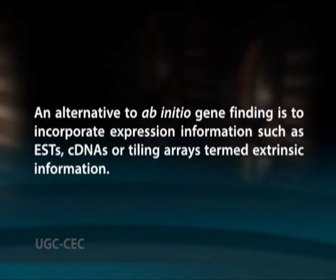Procedures utilizing properties of the DNA sequence alone to predict locations of genes are termed ab initio methods, and may additionally incorporate information from homologous regions of related genomes. Ab initio methods utilize only intrinsic properties of the DNA sequence itself. An alternative is to incorporate expression information such as ESTs, cDNAs, or tiling arrays — termed extrinsic information. Ab initio gene prediction is an intrinsic method based on gene content and signal detection.